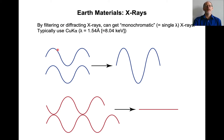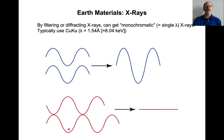Now, if you have two x-rays — any kind of electromagnetic radiation — that are lined up with each other so the peaks match the peaks and the troughs match the troughs, then you get what's called constructive interference. It has the same wavelength but a higher amplitude. And if they're offset so the peak in one hits the trough of another, then you get what's called destructive interference, and you don't get any signal at all — they cancel each other out.